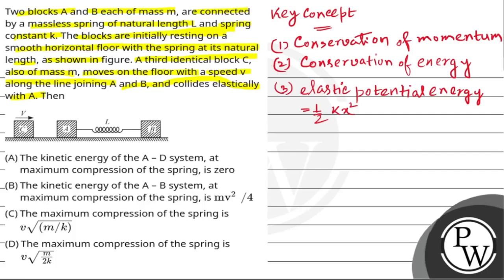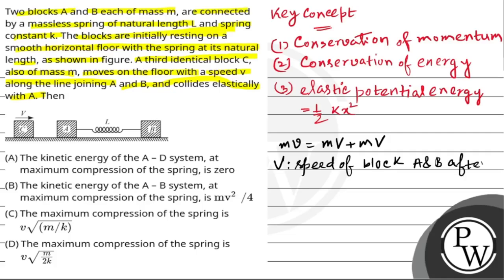Now we apply conservation of momentum. We write: m·v = m·V + m·V, where V is the speed of blocks A and B after block C collides elastically with A. Before collision, A and B were at rest, and after collision, C is at rest. From both sides of the equation, m cancels out and we have v = 2V, so V equals v by 2.